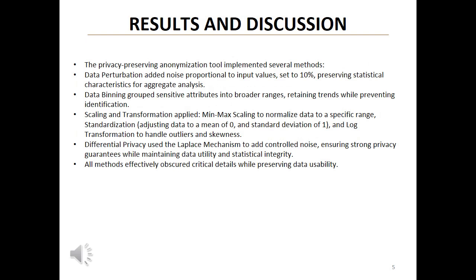The privacy-preserving anonymization tool implemented several methods. Data perturbation added noise proportional to input values, set to 10%, preserving statistical characteristics for aggregate analysis. Data binning grouped sensitive attributes into broader ranges, retaining trends while preventing identification.